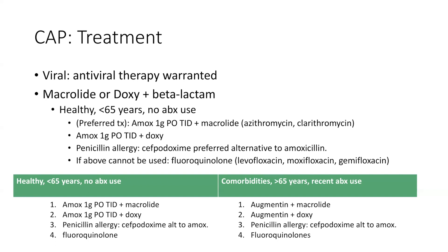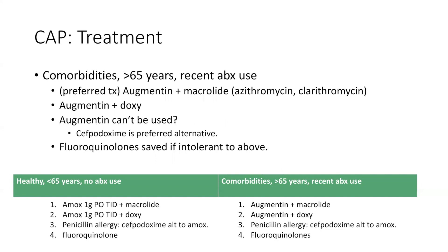Now let's talk about that second type of patient — the patient with comorbidities, older than 65, who has used antibiotics in the past. The preferred treatment, number one, would be Augmentin plus macrolide. If you can't use the macrolide for whatever reason, use Augmentin plus doxy. If they have a penicillin allergy, do not give them Augmentin because it's under the penicillin family. Switch it with cefpodoxime plus macrolide or cefpodoxime plus doxy. And if all of that fails, you could still use your fluoroquinolone as the fourth-line option.